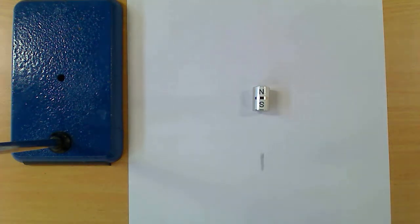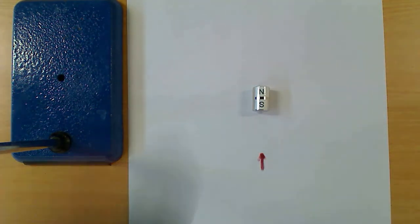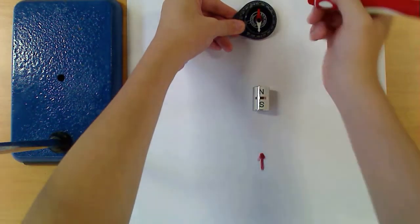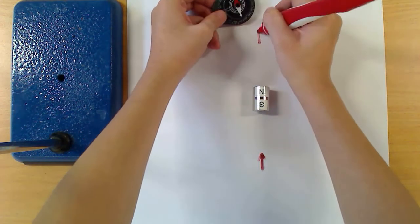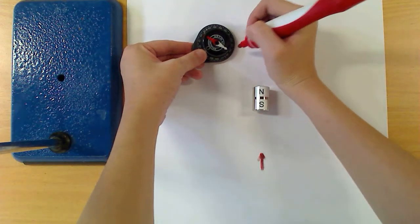So at a point directly below the magnet, the compass points up. And directly on top of the magnet, the compass also points up. Slightly to the side, you can see the compass starts changing directions.